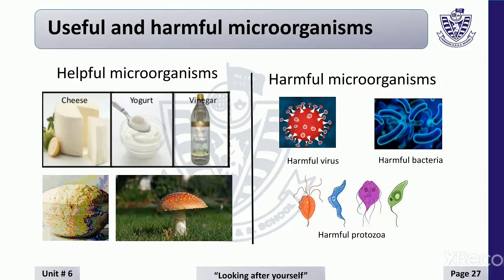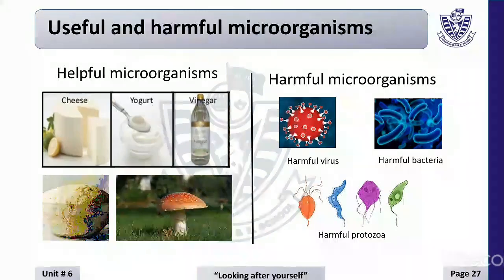Harmful bacteria: Bacteria are unicellular organisms. They grow and multiply very rapidly and can make you ill. Diseases caused by bacteria include food poisoning, whooping cough, tooth decay, cholera, and typhoid. Harmful protozoa: Protozoa are unicellular organisms. If they enter the body, they can live and grow there. They grow in moist places and are commonly found in water, causing diseases such as diarrhea and dysentery.